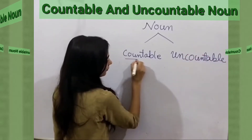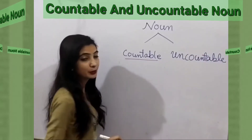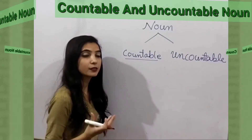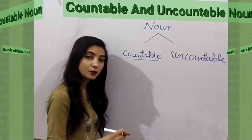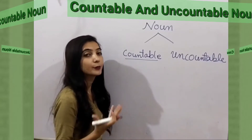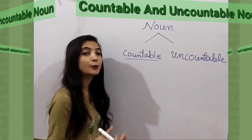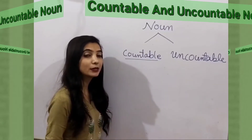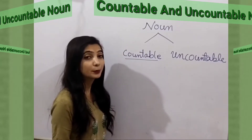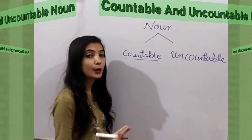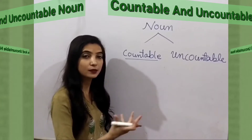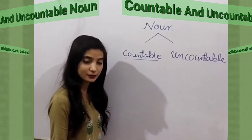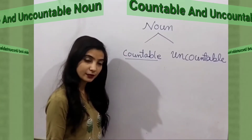What is countable noun? Countable noun means the nouns which can be counted. We can count them like one apple, two apples, a bike, two bikes, a girl, two girls, three girls, many girls.